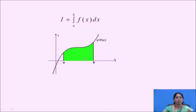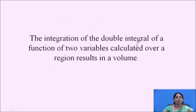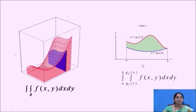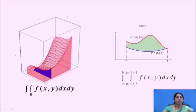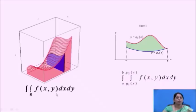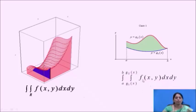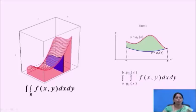The integration of a double integral of a function of two variables calculated over a region results in volume. In a three-dimensional diagram, the integral gives us the volume. The integral is double integral over the region R for the function f of xy dx dy. The same example can be shown with the limits as integration from a to b, integration from g1 of x to g2 of x, f of xy dx dy.